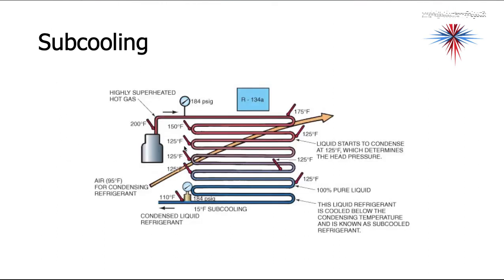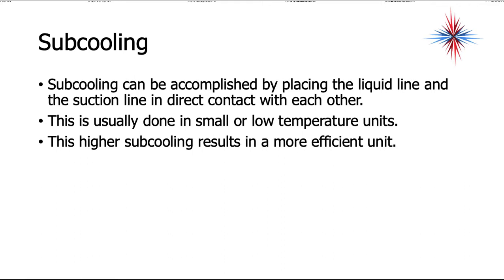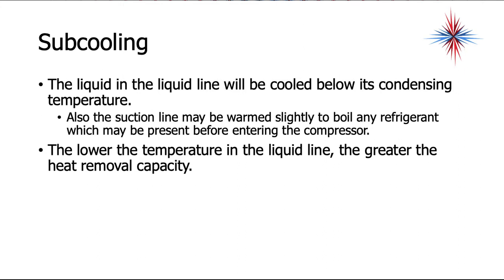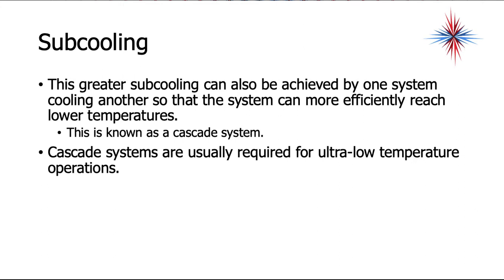Subcooling occurs in the bottom portion of the condenser, where temperature continues to drop after the change of state and additional sensible heat is removed. Subcooling can also be accomplished by placing the liquid line and suction line in direct contact with each other — usually done in small or low-temperature units. Higher subcooling results in a more efficient unit. The lower the liquid line temperature, the greater the heat removal capability in the evaporator.